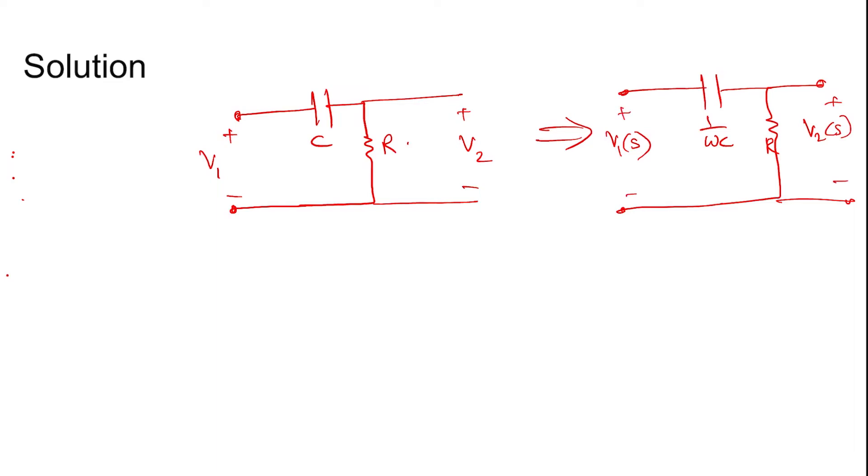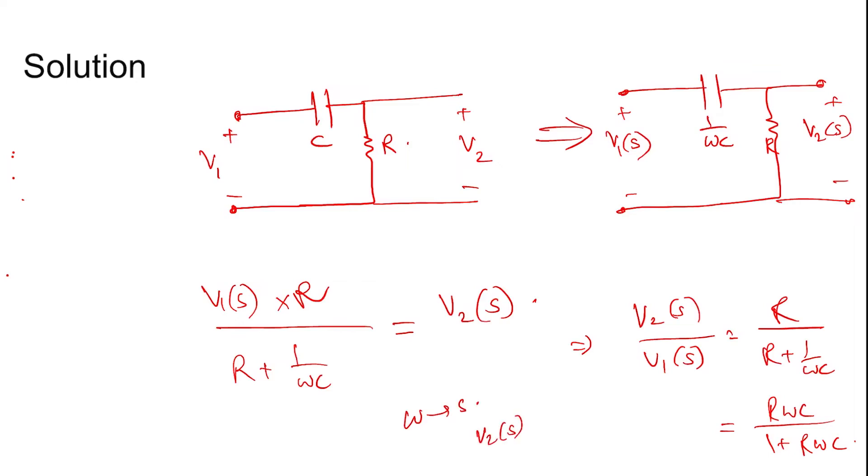Now using the voltage division rule, V1(s) into R divided by R plus 1 by sC equals V2(s). So V2(s) divided by V1(s) equals R by R plus 1 by sC, or it can be written as sRC divided by 1 plus sRC. Replace omega by s and then you get V2(s) by V1(s) equals sRC divided by 1 plus sRC.